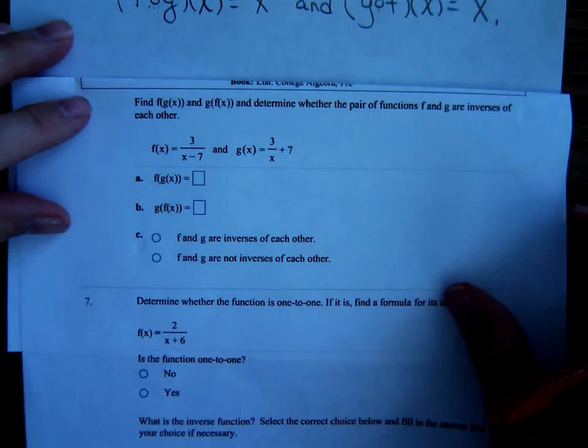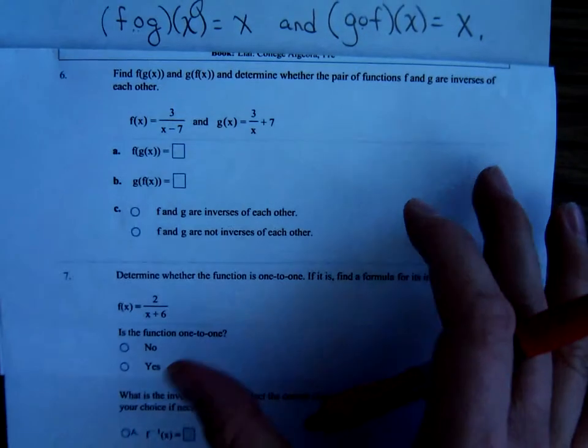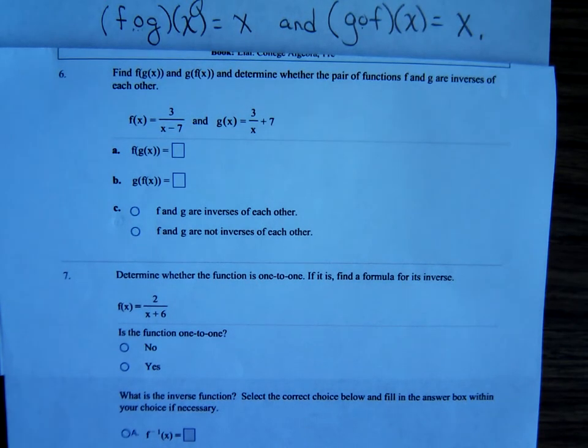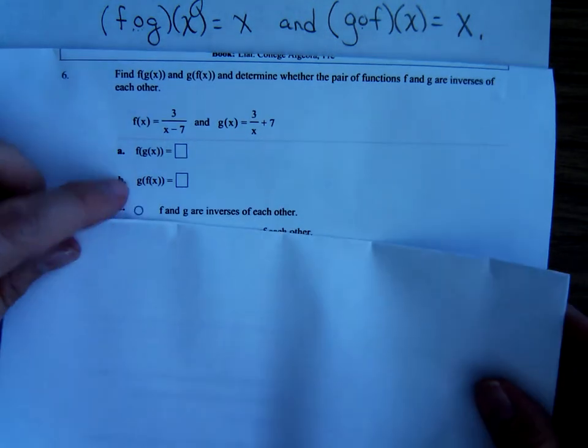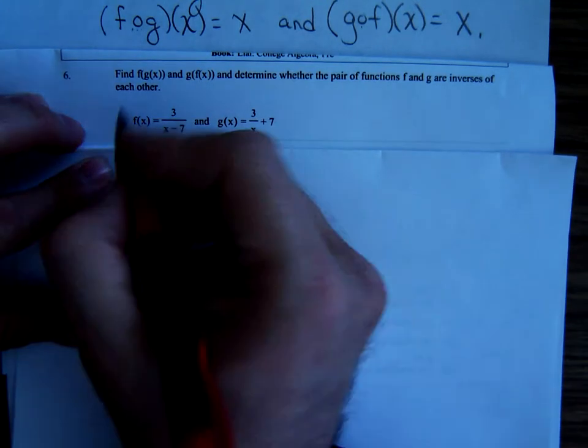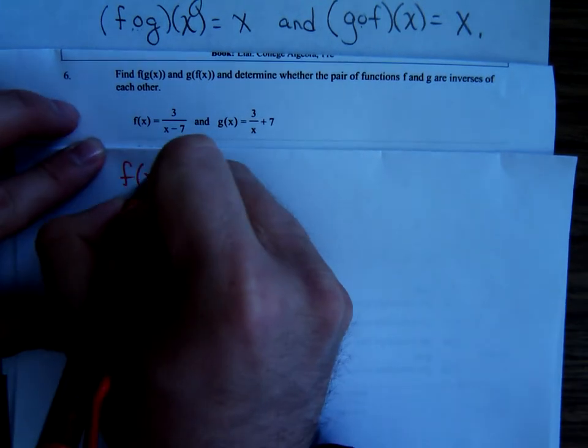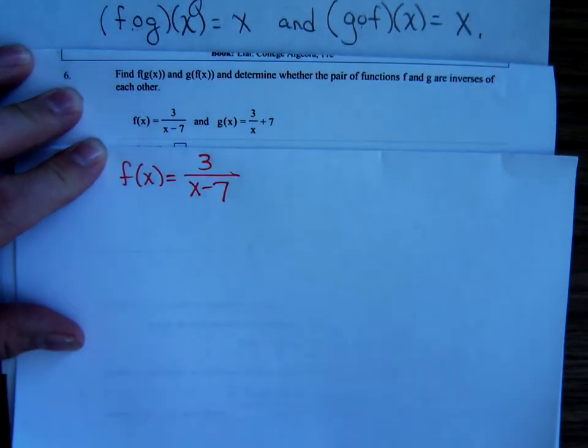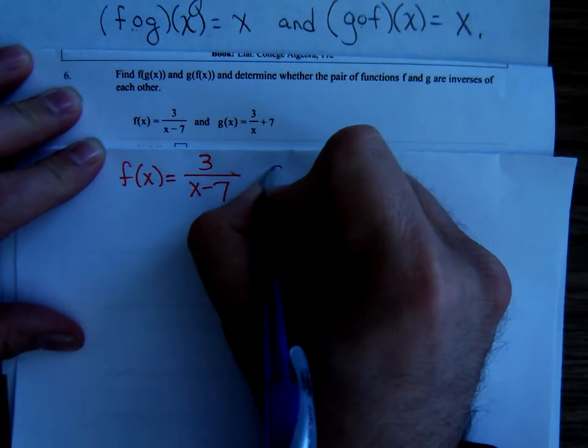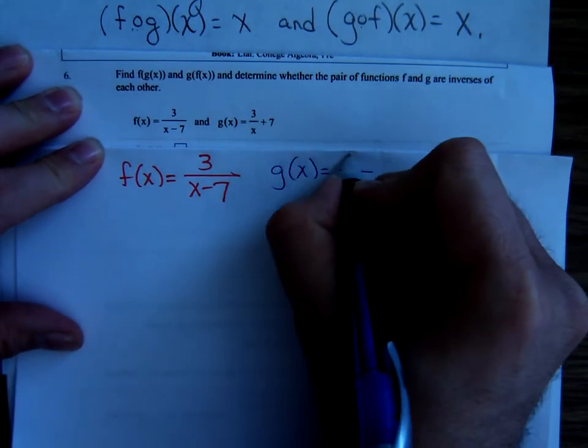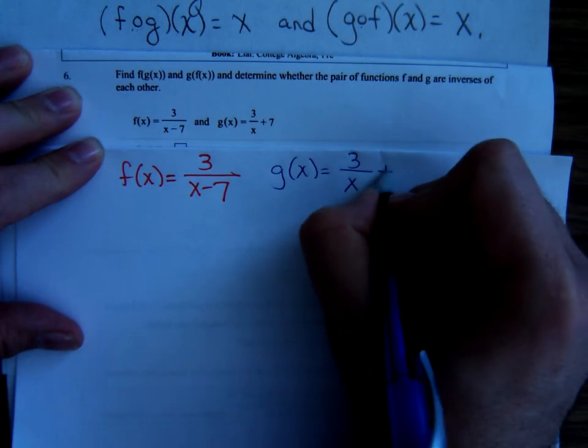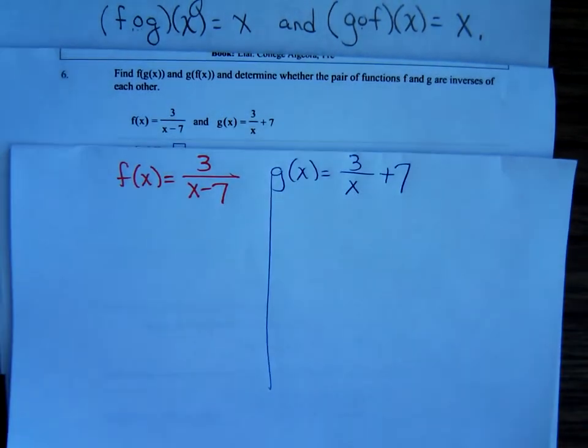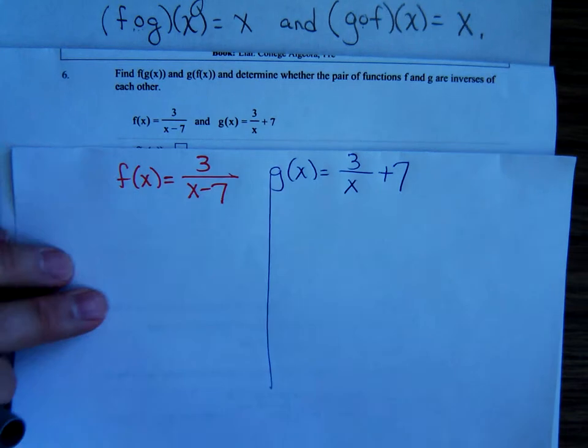Problem 6 says same instructions: find f of g of x and g of f of x and decide if they're inverses of each other. In order for them to be inverses we should be getting x for both of these answers. Let me do the first one. f of x is 3 over x minus 7, g of x is 3 over x and then a plus 7.